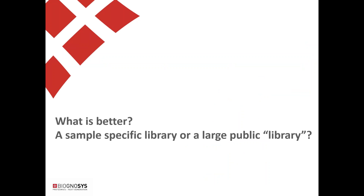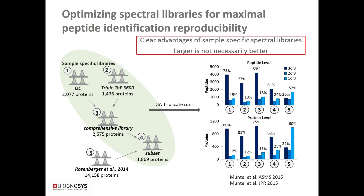One question we get asked frequently is: what is better, a sample-specific library or a large public library? Better means getting a higher number of identified proteins, lower CVs, and higher reproducibility. Let's look at a systematic comparison by Jan Mantel and Hanno Steen from Boston Children's Hospital, who compared results from different libraries in terms of overall protein and peptide identification and reproducibility.